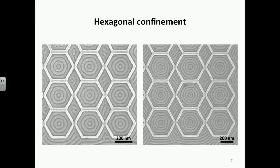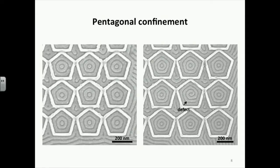We can confirm that the block copolymer patterns form starting from the outside and ending on the inside. Next, we tried pentagonal confinement. Similar to circular and hexagonal confinement, we observed well-aligned, well-ordered concentric pentagonal ring shapes. Again, the outermost ring was pentagonal, but the inner rings became more circular. Also, in the right SEM image, we can see an interesting spiral-shaped effect.